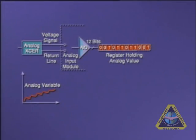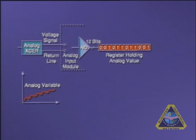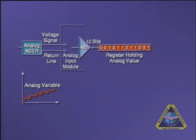During the control of the process, a signal variable is measured by a sensor and passed to the input module. The module itself transforms the signal into a discrete value according to the resolution of the A-to-D converter. In this example, 12 bits.